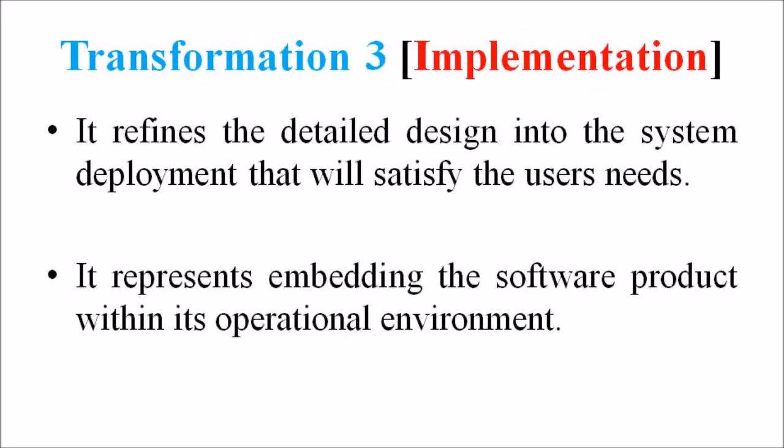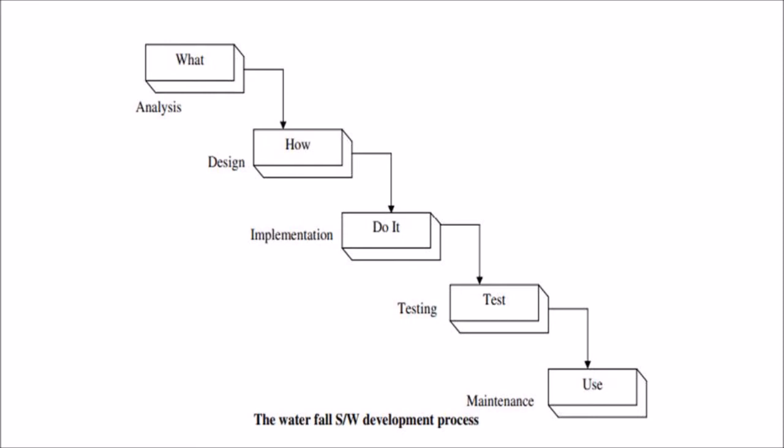In transformation three — the implementation phase — it refines the detailed design into the system development that will satisfy the user needs. It represents embedding the software product within its operational environment. The software development process follows the waterfall approach, which starts with deciding what is to be done, then how to accomplish it, then doing it, then testing the result to see if we have satisfied the user requirements, and finally using what we have done.